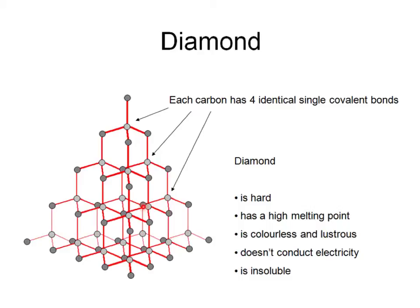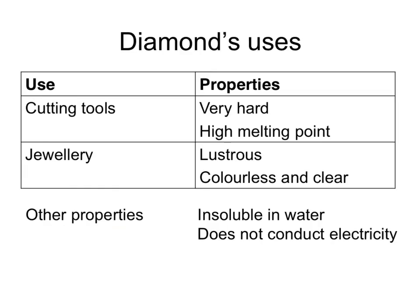Diamond doesn't conduct electricity and it's insoluble in water. The main two uses of diamond can be related to its properties. First of all, diamond is used in cutting tools. Why is it used in cutting tools? Because diamond is very hard and therefore will scratch or work its way through other materials. And secondly, because it's got a high melting point — the end of cutting tools would get very hot and you wouldn't want the diamonds on the end to melt.